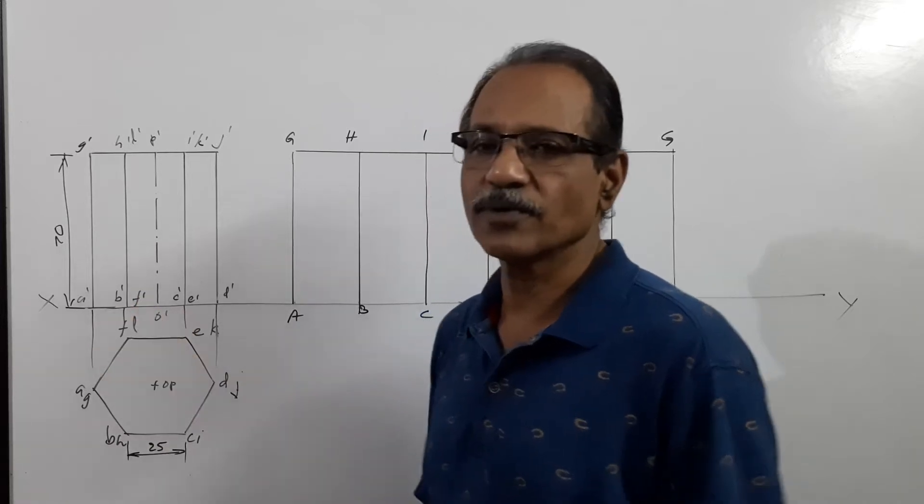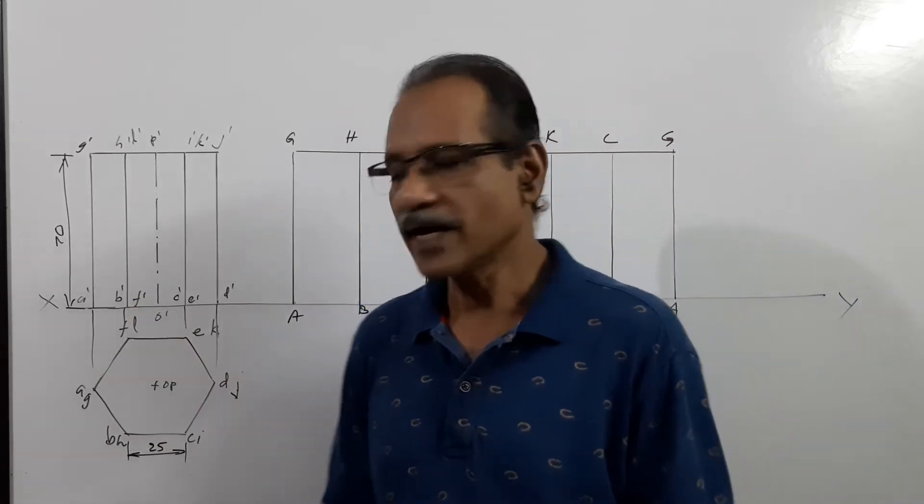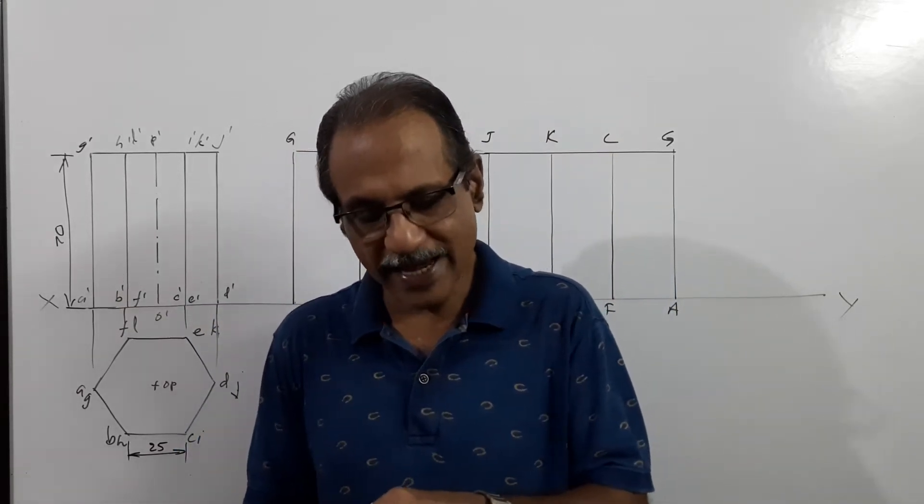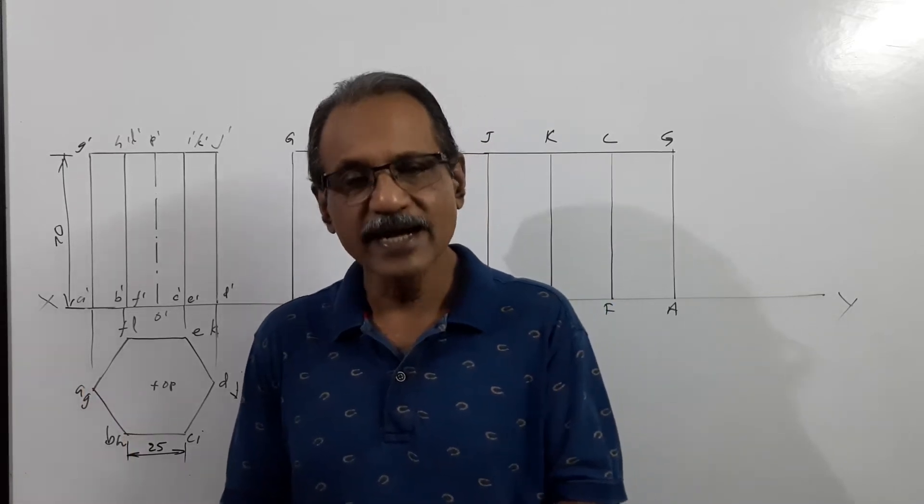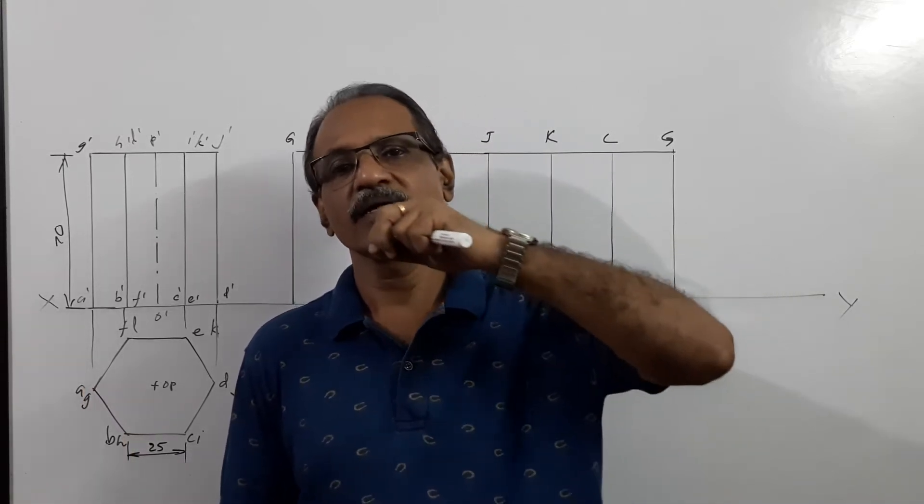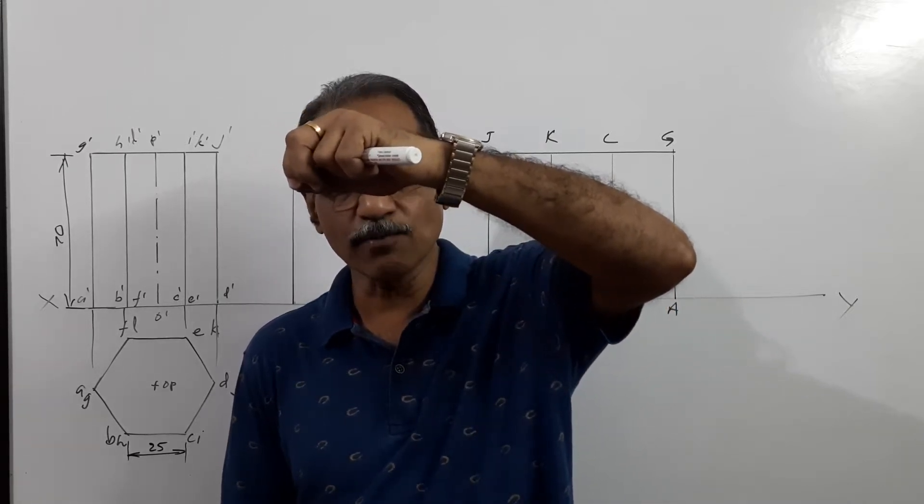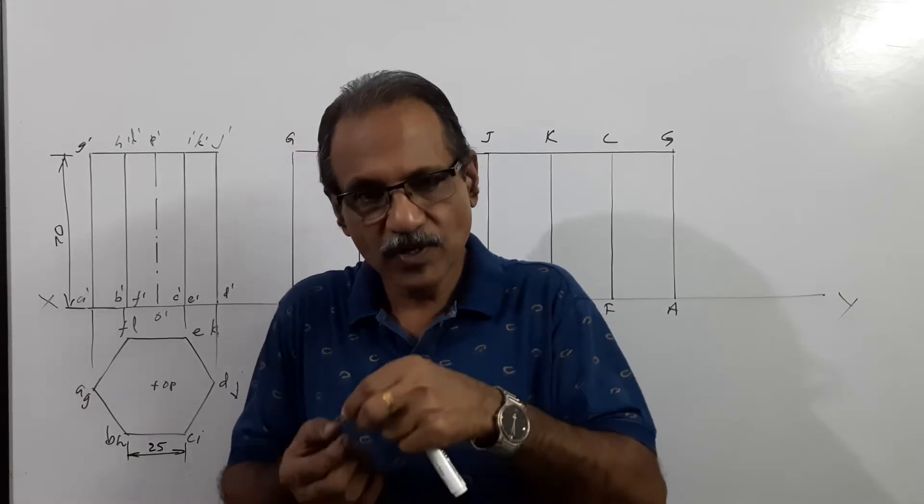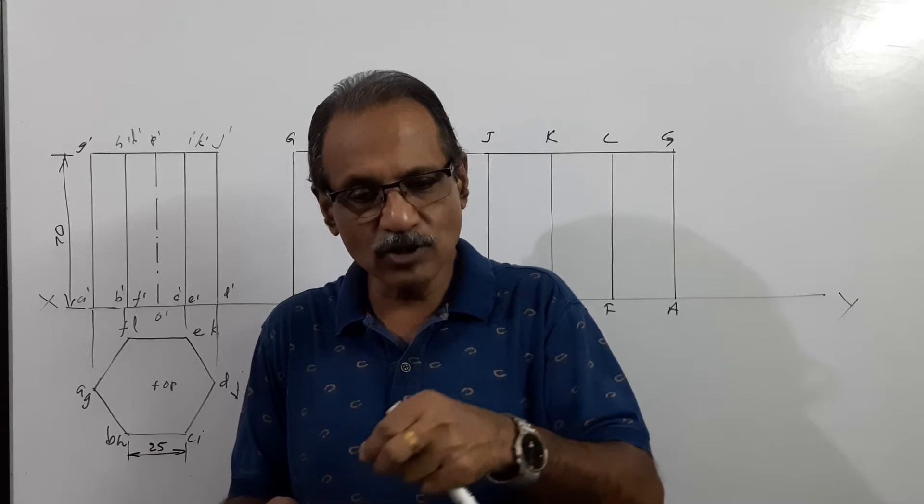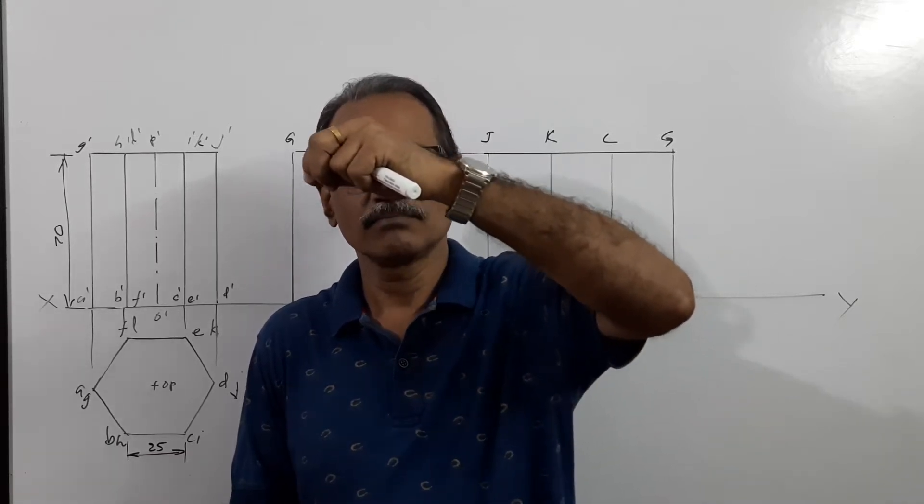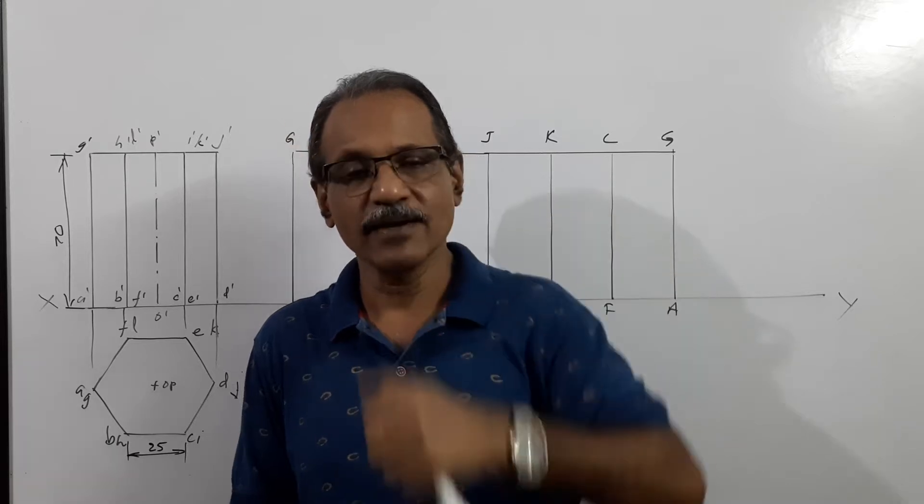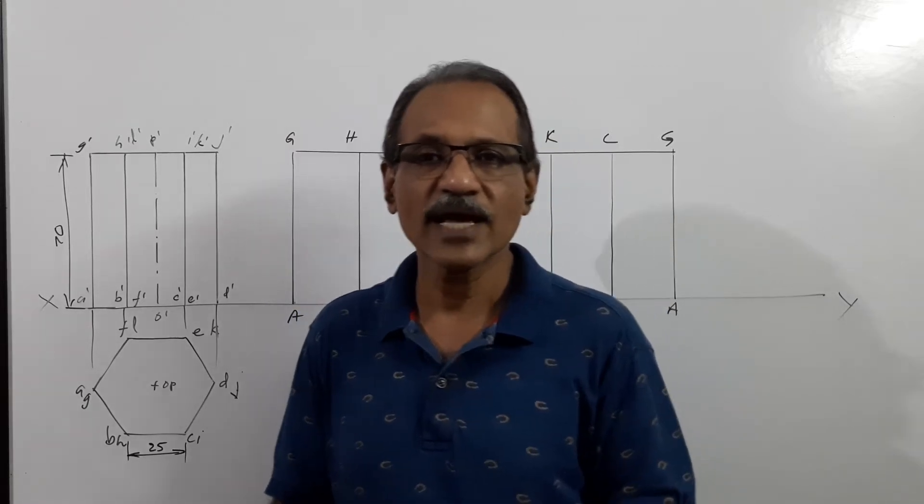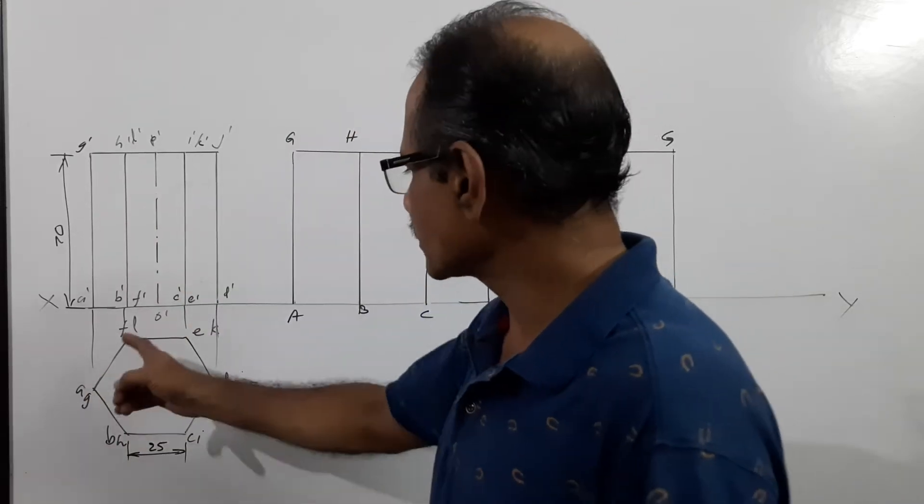I have drawn the plan and elevation. An insect stationed at the bottom corner A travels around the body in a straight line and comes to the point right above A. Find the shortest path and show it in the plan and elevation. That's the question.